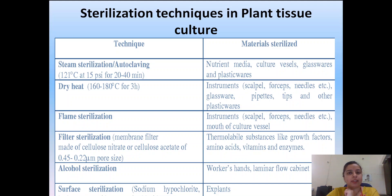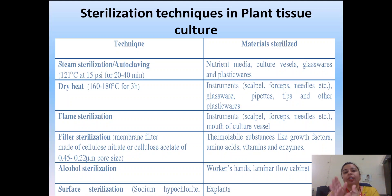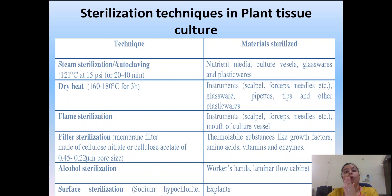All things used in this experiment should be sterilized — starting from the explant to the glassware, knife, spatula, or the plucker being used, and also the nutrient medium as we saw. Each component needs to be sterilized before getting to the final stage, and each equipment, glassware, or explant requires a different type of sterilization technique. For the nutrient medium, we use autoclave as we saw in the last step.